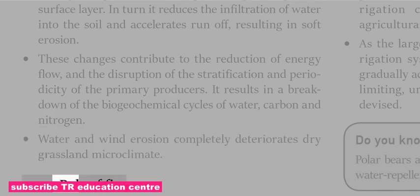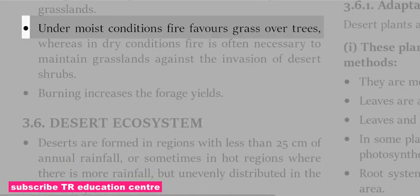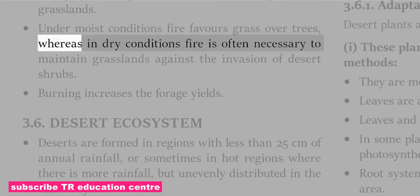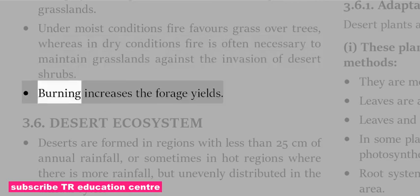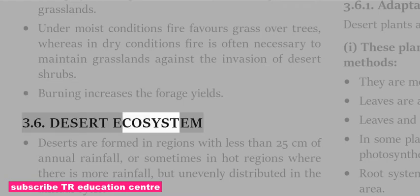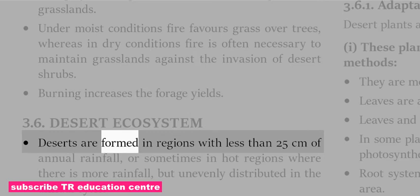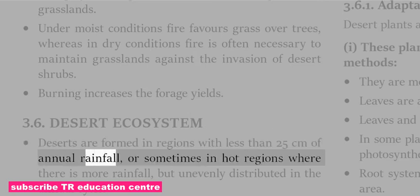Fire plays an important role in the management of grasslands. Under moist conditions, fire favors grass over trees, whereas in dry conditions fire is often necessary to maintain grasslands against the invasion of desert shrubs. Burning increases the forage yields.